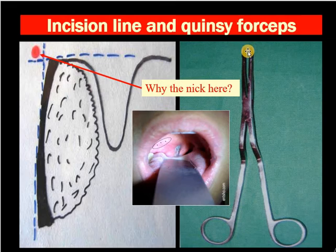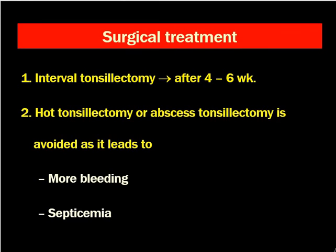This is the Thaliwal peritonsillar abscess draining forceps — you can see the marking at around 1 cm. When a patient develops a peritonsillar abscess, there is a chance they may develop a second attack. When the patient develops a second attack of Quincy, they have to undergo tonsillectomy. However, it is not usual to perform tonsillectomy after the first attack because around 80% of patients will not have a second attack. Only 20% might get a second attack, so surgery is usually done after 4 to 6 weeks.